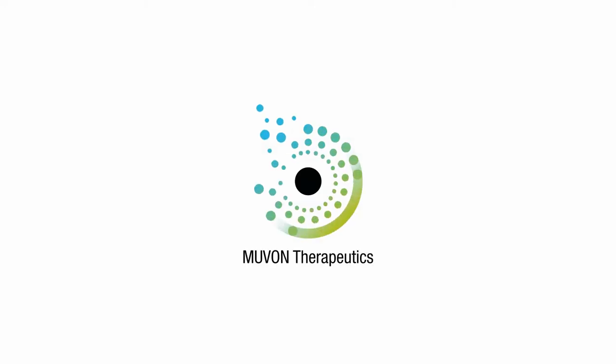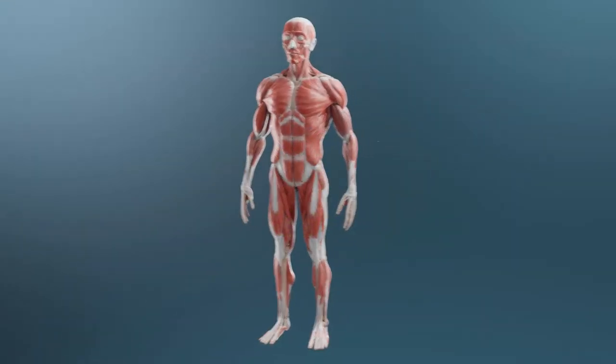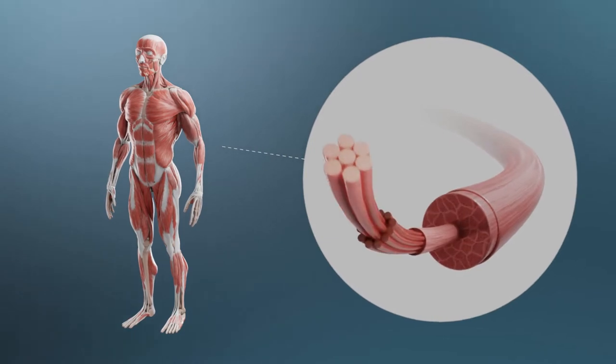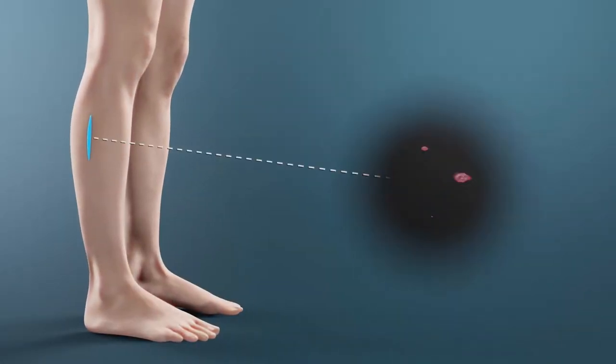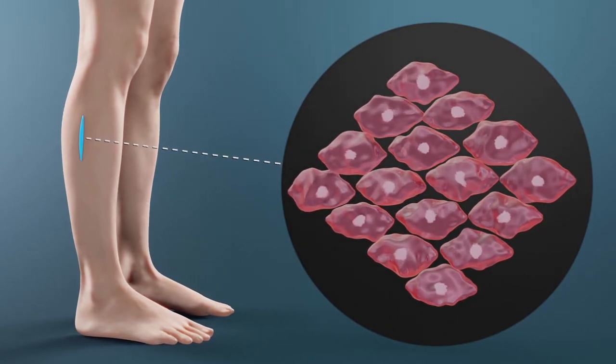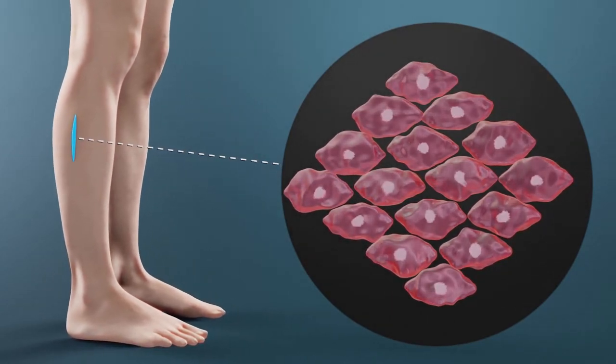MoveOn Therapeutics is a Swiss biotechnology startup with the goal to develop an autologous cell therapy for the treatment of damaged skeletal muscles. The therapy is based on the use of a patient's own muscle precursor cells to regenerate damaged muscle tissue.